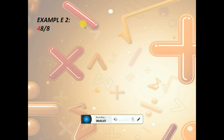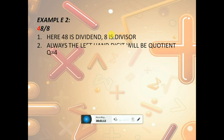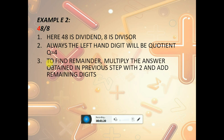Next, going to a boundary condition where the number is exactly divided by 8: 48 by 8. Here 48 is dividend and 8 is divisor. Always the left-hand digit will be the quotient, hence q equals 4.